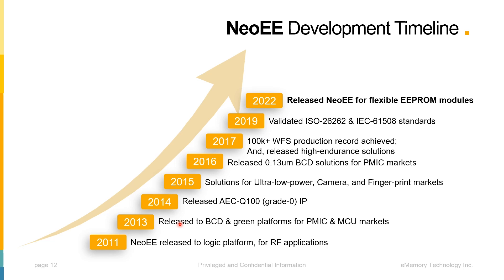NeoEe has achieved automotive validation for the ISO 26262 ASIL and IEC 61508-03 standards. It has been validated for more than 200 IP packages, over 14 foundries and IDMs, 46 processes, with 26 more ongoing. It has also been implemented into more than 300 products and roughly 1 million 8-inch wafers in production.